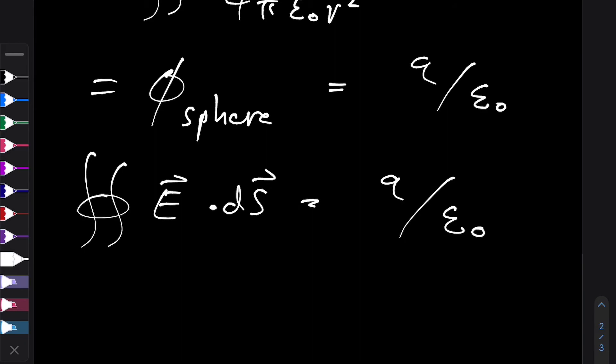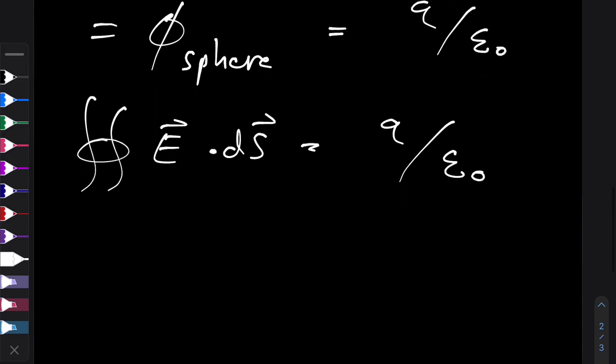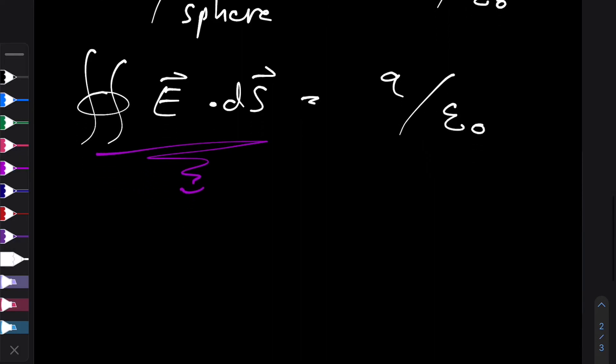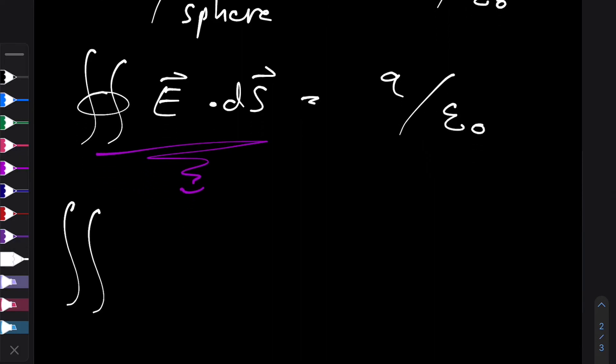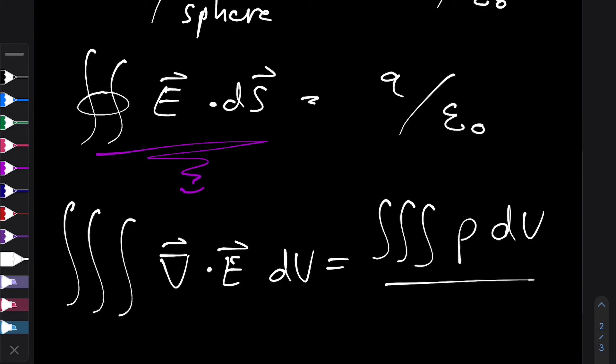So we can convert this into Maxwell's first equation by considering divergence theorem. And the divergence theorem allows us to convert this closed surface integral into a volume integral. So we can now integrate over the volume enclosed by that surface of not E, but the divergence of E, which is the number that tells us how E spreads to space, integrated over the entire volume. And that's equal to, we can also rewrite q in terms of a volume integral, because q is just a volume integral of charge density over that same volume, still divided by ε₀.